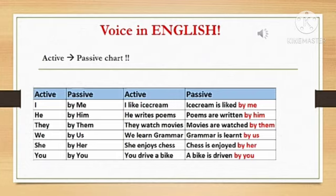For the next pronoun we — by passive conversion we use by us. For example, the active sentence: We learn grammar. By passive conversion: Grammar is learned by us.